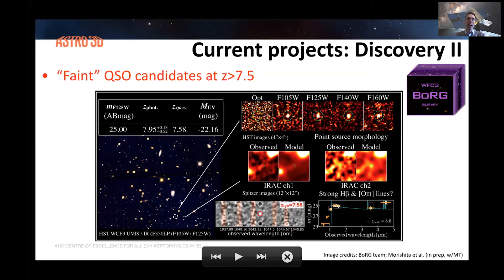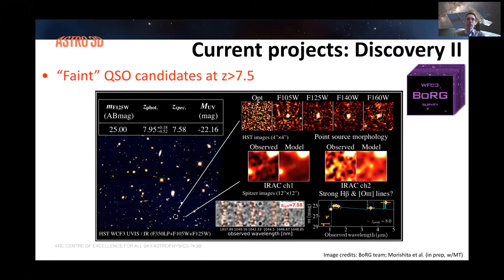We have Spitzer IRAC data for this object, and as an update to what I showed at the Astro 3D retreat in January 2020, we also had two nights of Keck MOSFIRE observations on the source. The weather was not great unfortunately, but we have a very tentative detection that we are associating to Lyman-alpha at redshift 7.6, with the spectrum shown here in the central lower inset. We have now submitted proposals for further spectroscopic follow-up to confirm this very interesting faint quasar candidate at the core of the epoch of reionization.